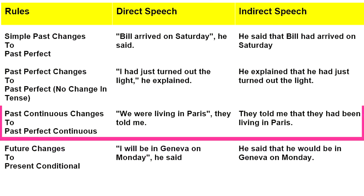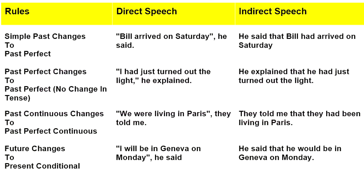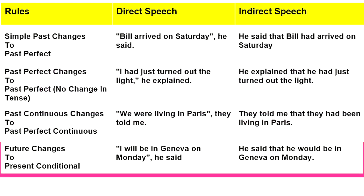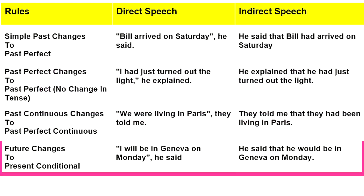Seventh rule: past continuous changes to past perfect continuous. For example: 'We were living in Paris,' they told me. In indirect speech: they told me that they had been living in Paris. Eighth rule: future changes to present conditional. For example: 'I will be in Geneva on Monday,' he said. In indirect speech: he said that he would be in Geneva on Monday.